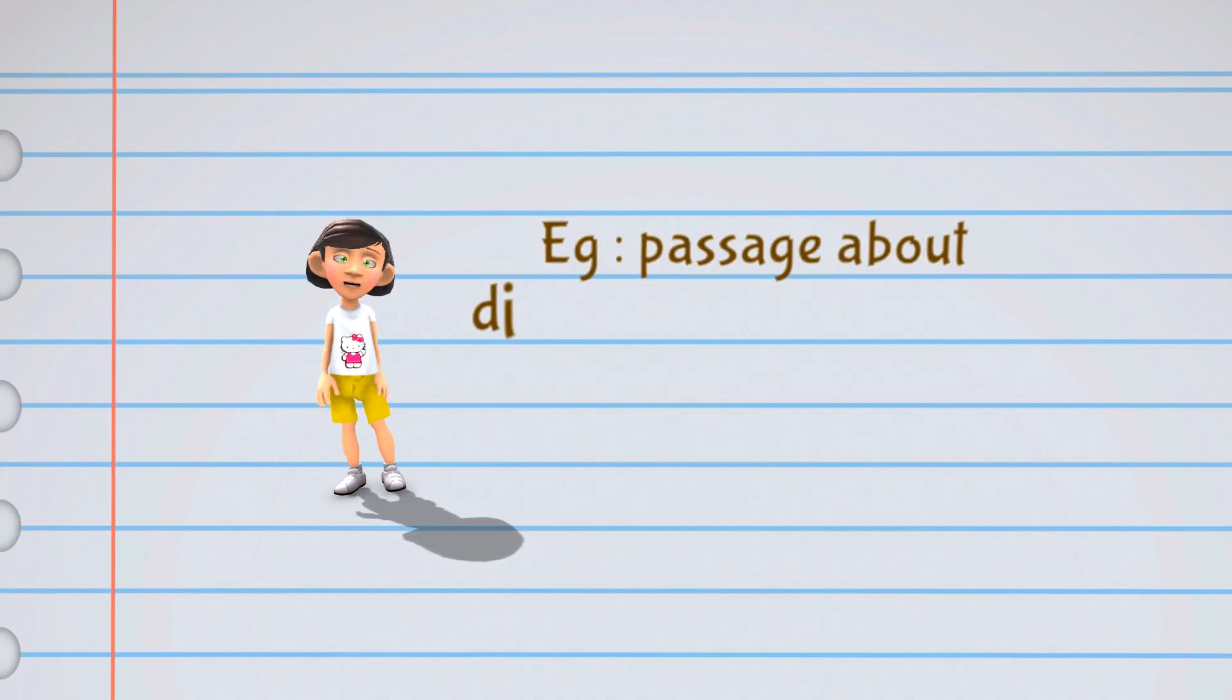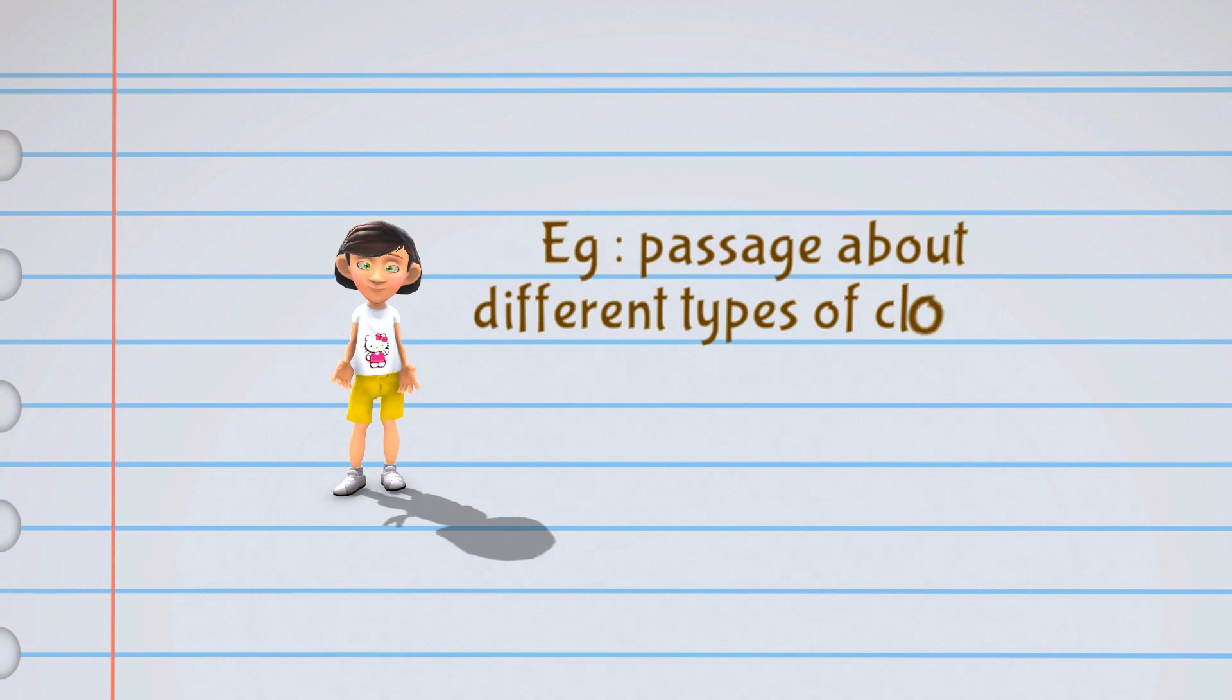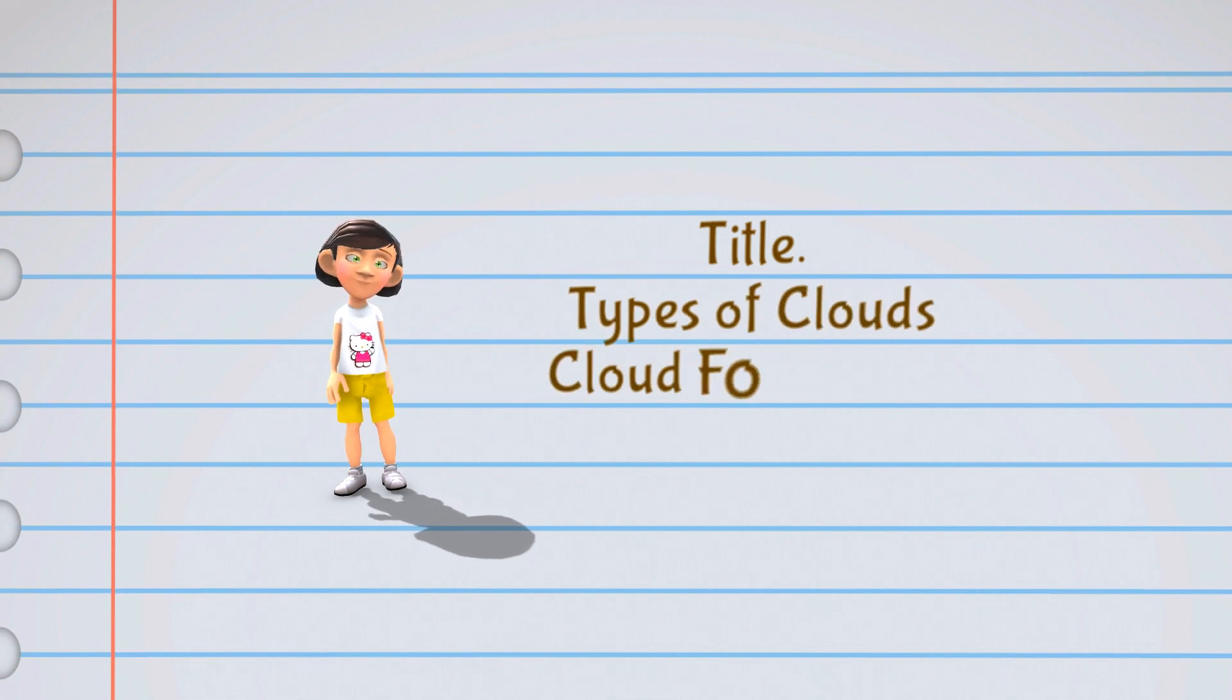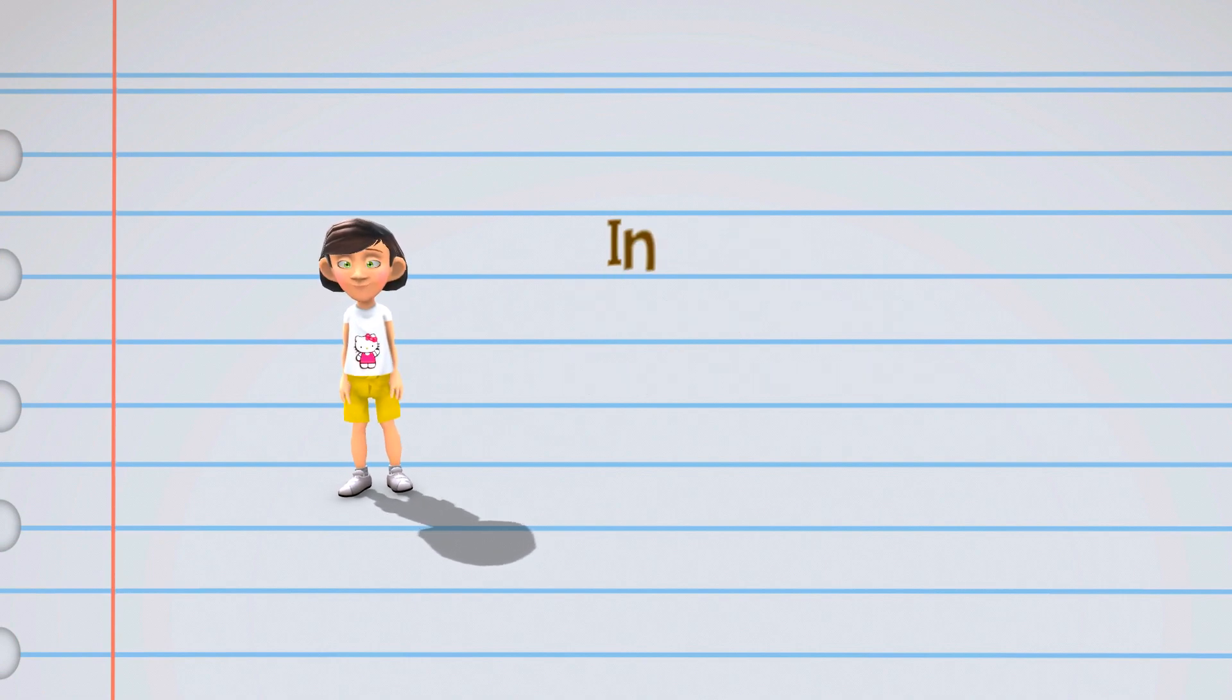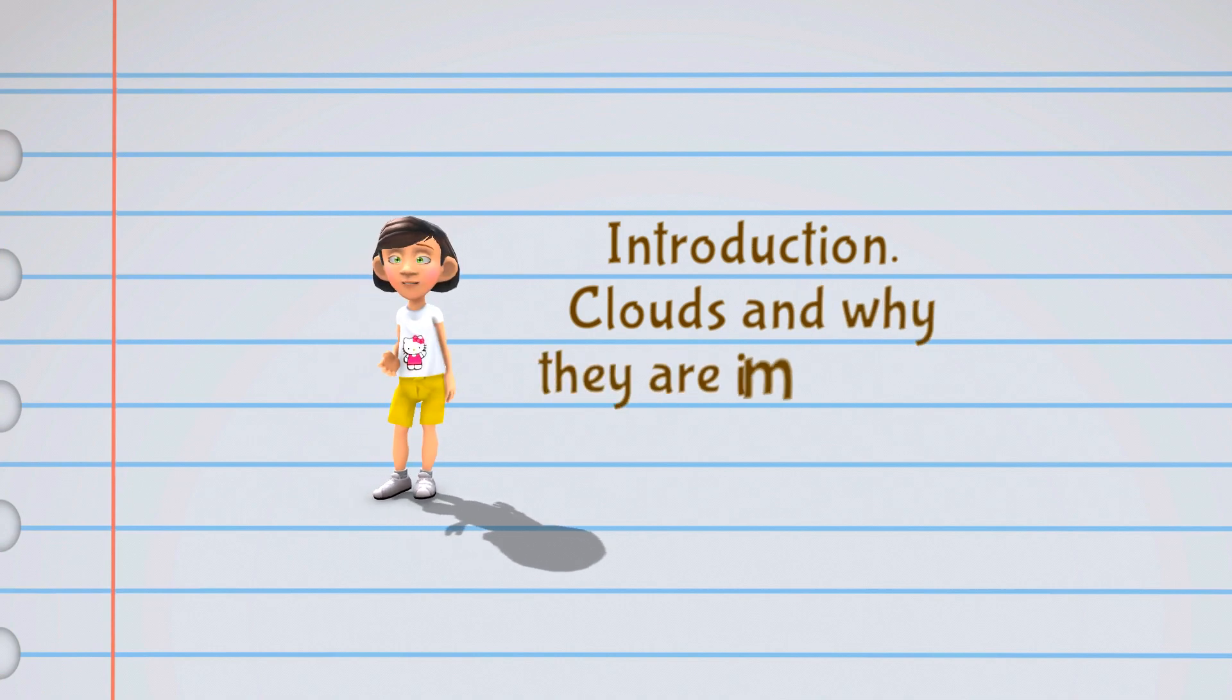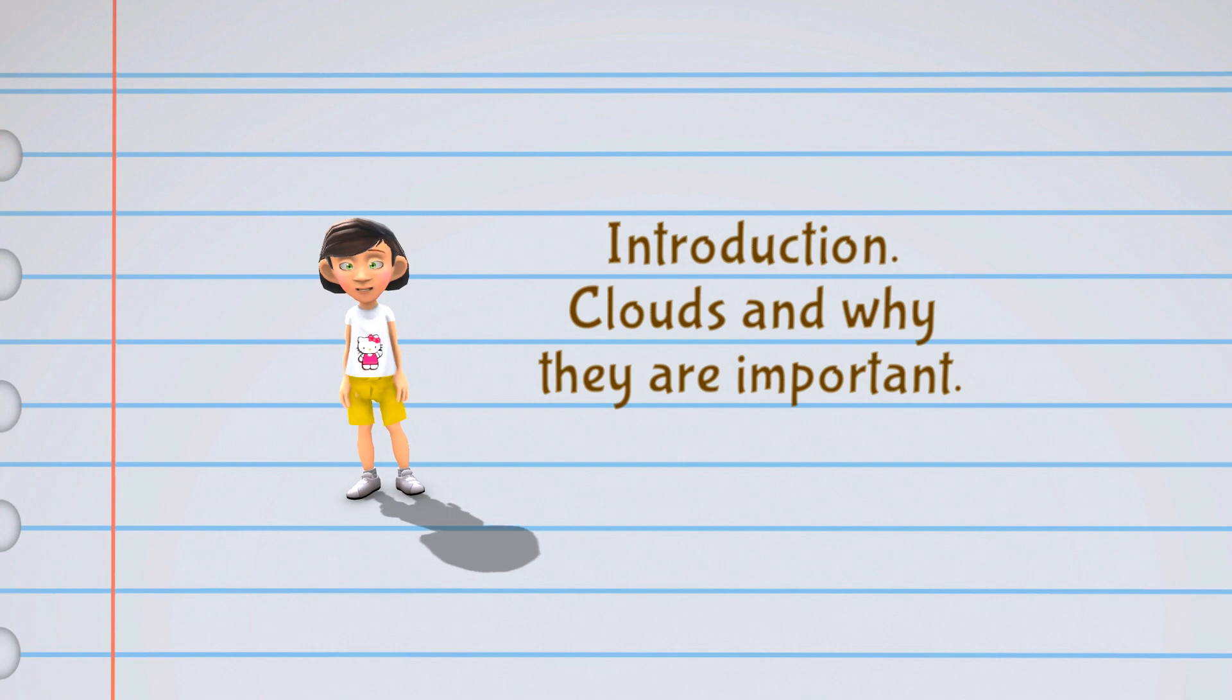For example, let's say you're reading an informational passage about different types of clouds. Here are some things you might look for to determine the topic and purpose. The author might start by introducing the topic of clouds and why they are important.